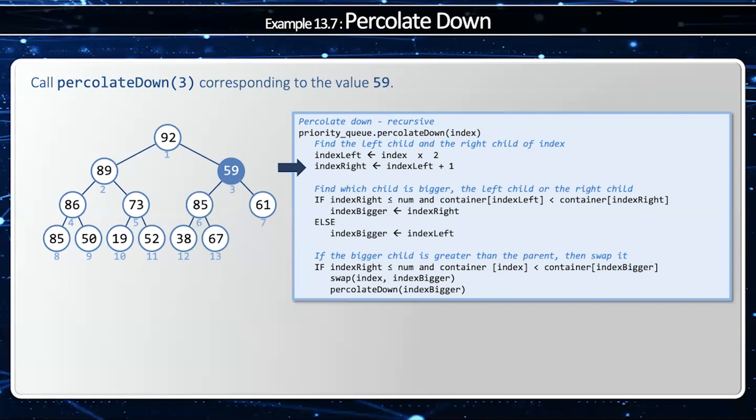And now I'm going to see which one is bigger. It looks like 85 is bigger, which is my left index. So I'll remember that. And then I'm going to perform a swap, and I'm going to swap my 85 with my 59. Am I finished? No, I'm going to call percolate down again.